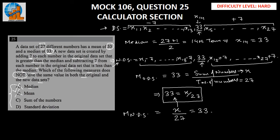Let's go to option C — the sum of the numbers. As we already saw while calculating the mean, the sum of the numbers will not change. We are subtracting 7 from the first 13 numbers and adding 7 to the next 13 numbers, so the addition and subtraction simplify to zero. Hence the sum of numbers remains the same, and we can eliminate option C.